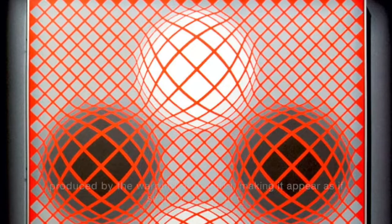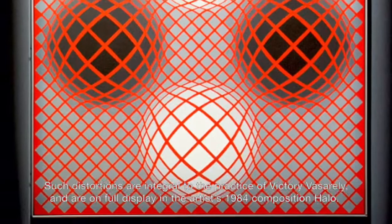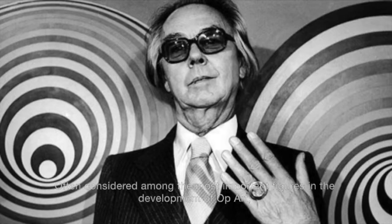But rather than relying solely on shading or modeling, the spheres are the product of an illusion produced by the warping of the grid, making it appear as if seen through water. Such distortions are integral to the practice of Victor Vasarely and are on full display in the artist's 1984 composition, Halo.